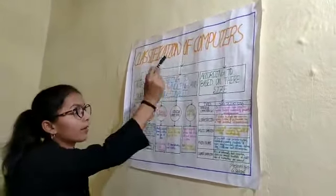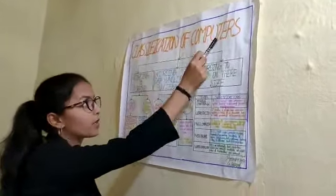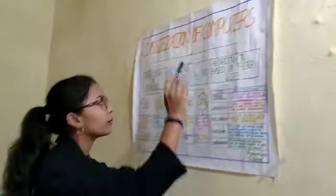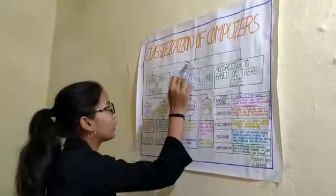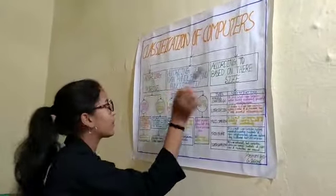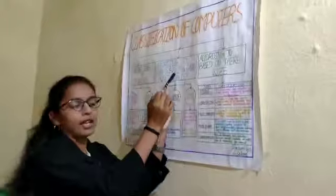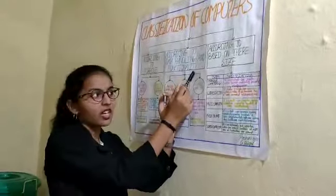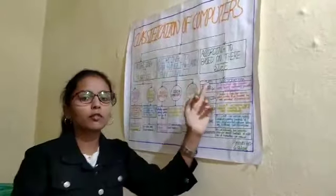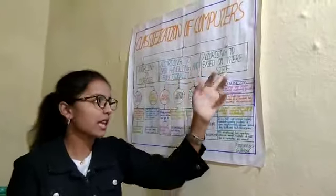Coming to my topic, classification of computers. Computers are mainly classified into three types: according to purpose, according to data handling and functionality, and according to their size.